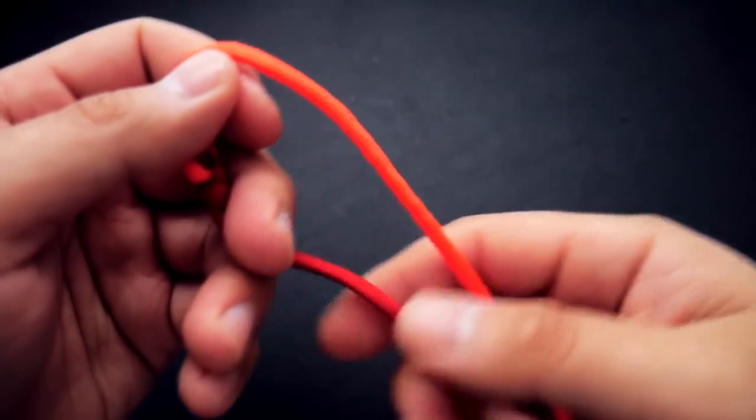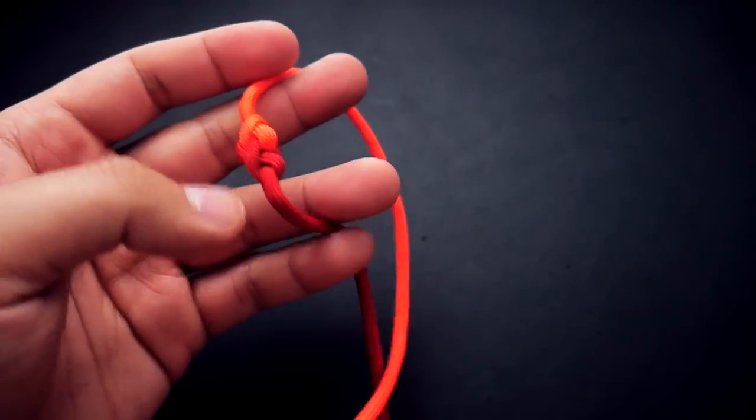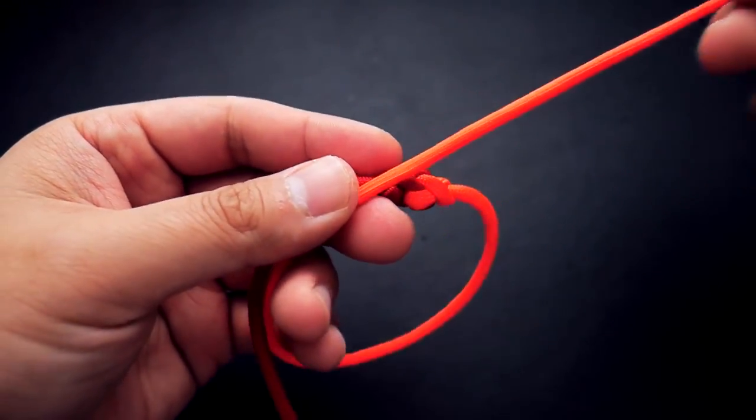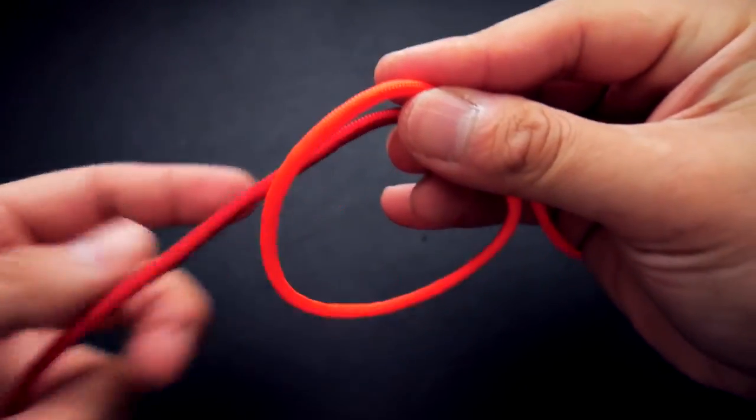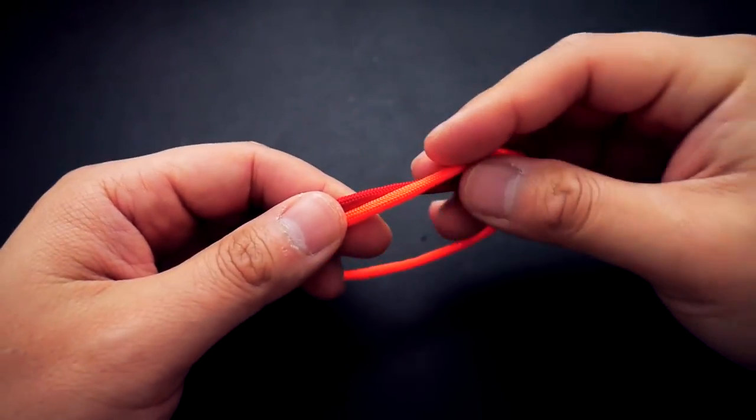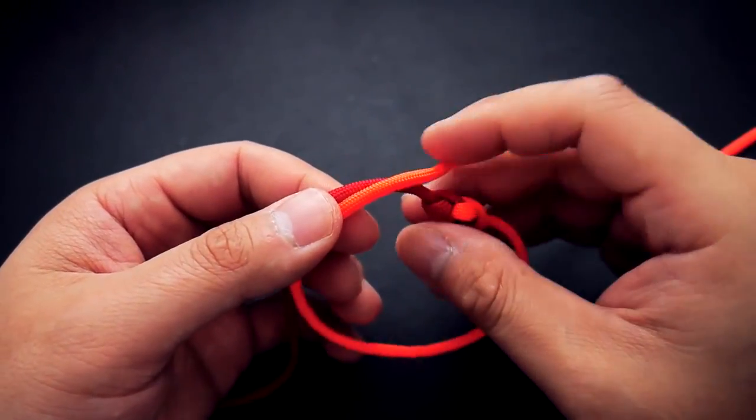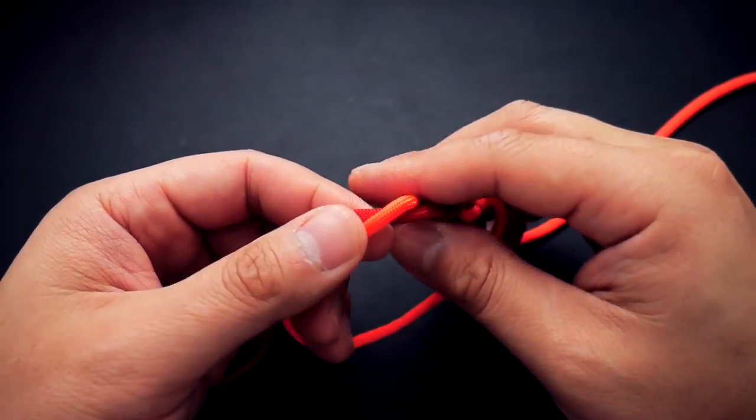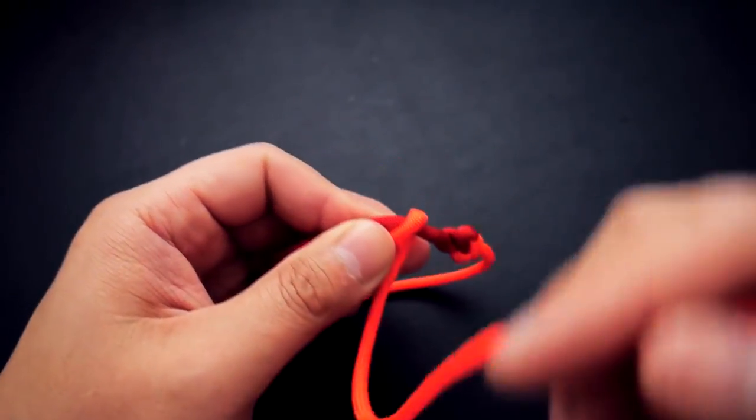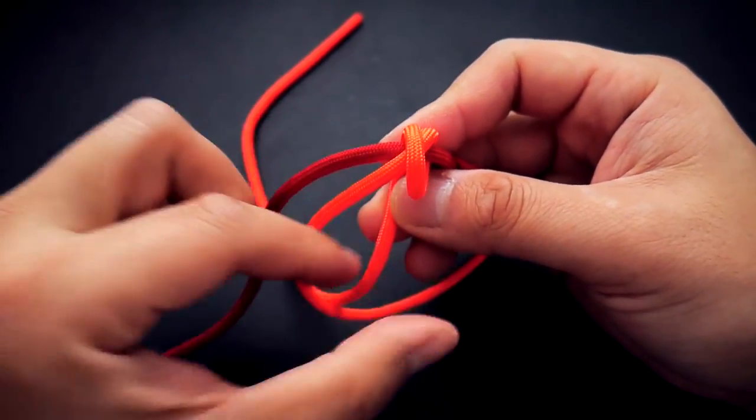Now that our two-color eternity knot is done, we're going to take our working cords and tie the scaffold knot to connect it to the other side. I've got it lined up with my red cord. I'm going to take that cord and wrap it around twice, going away from me. I like to form that little X there where the two cords cross over.